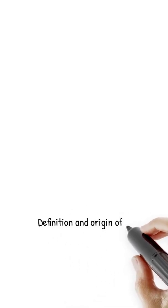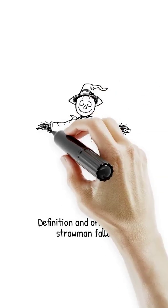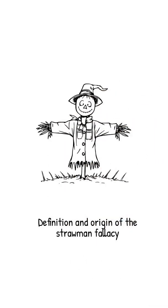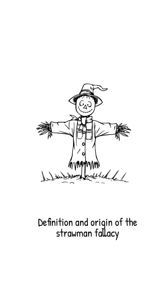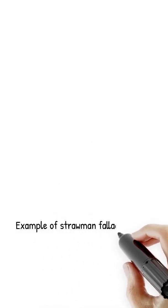So what's a strawman? It's when someone misrepresents an argument to make it easier to attack — like fighting a weak scarecrow instead of the real deal. The term comes from 20th-century logic, inspired by straw dummies that are easy to knock over, with roots in Aristotle's debates. It's sneaky and super common.